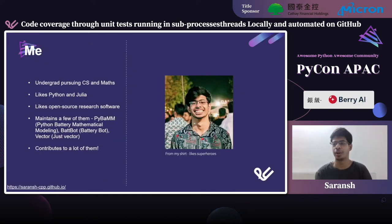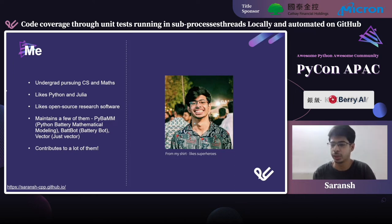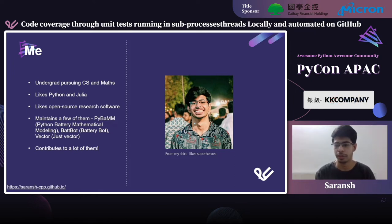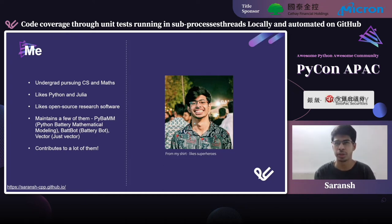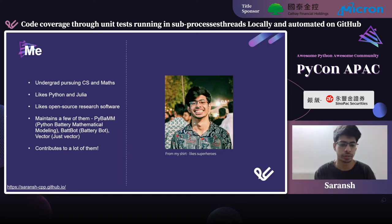A brief about me: I am an undergraduate pursuing CS and Maths from University of Delhi, I'm from India. I like Python and Julia and open source software, and I also maintain a few projects — PyBAMP, which stands for Python Battery Mathematical Modeling, BATBOT which stands for Battery Bot, and VectorJet, which can be used to manipulate physics-based vectors in Python. You can find me on GitHub.